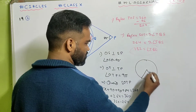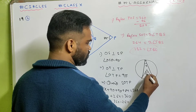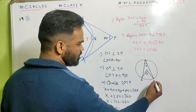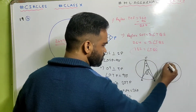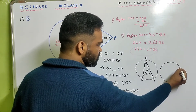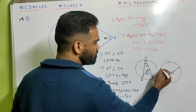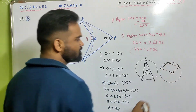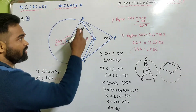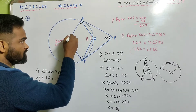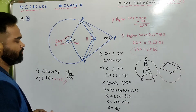To understand the theorem: angle at the circumference and angle at the center — if the circumference angle is X, the center angle is 2X. If you take the reflex angle at the center, that reflex angle will equal twice the angle at the circumference. This is the alternate case of the theorem.